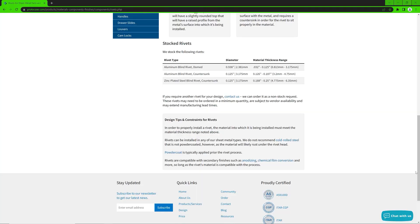Here at Proto-Case, we stock blind rivets which are sometimes called pop rivets. Blind rivets have no access to the rear or blind side of the joint.